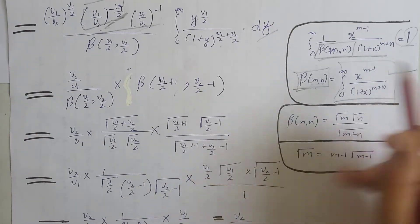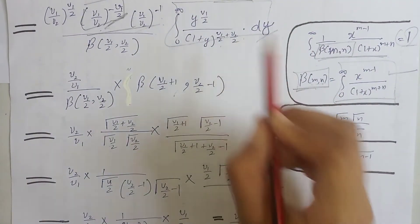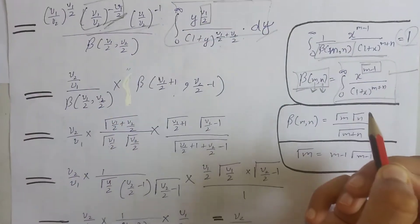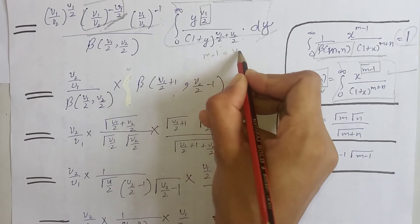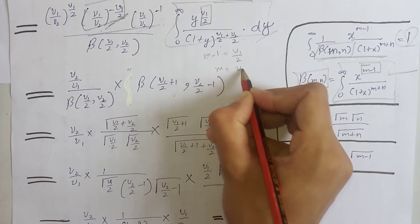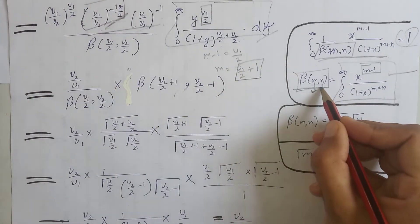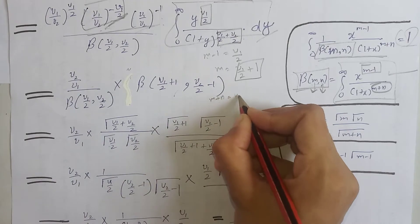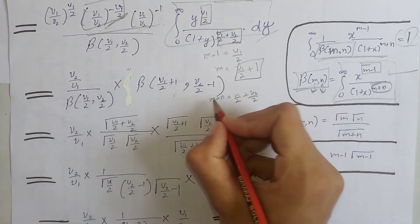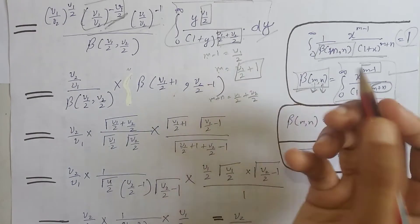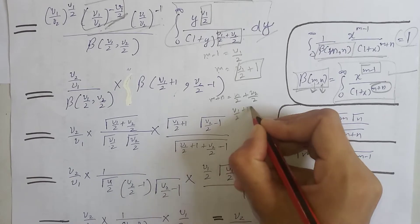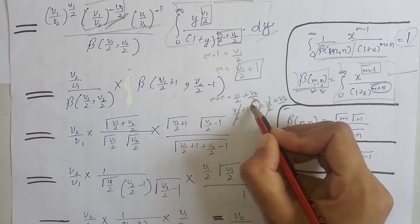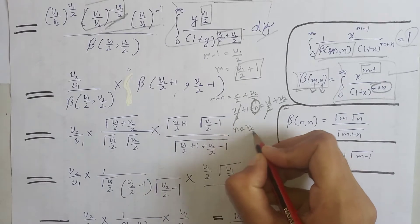We compare the integral with the beta function definition to find the values of m and n. Comparing the first term gives ν₁/2 plus 1 for m. Comparing m plus n with the full expression gives m plus n equals ν₁/2 plus ν₂/2. Since m equals ν₁/2 plus 1, substituting and cancelling gives n equals ν₂/2 minus 1.